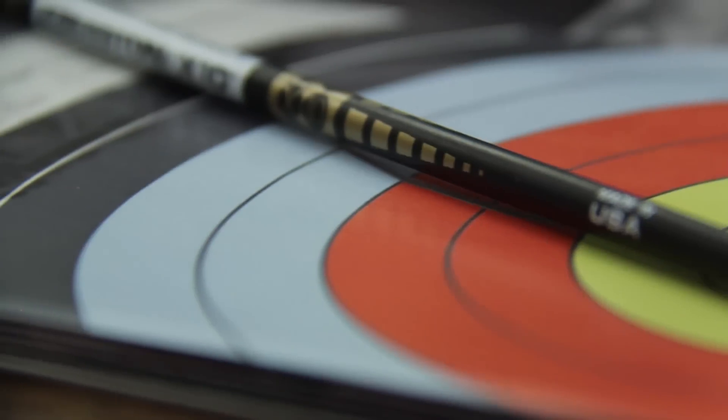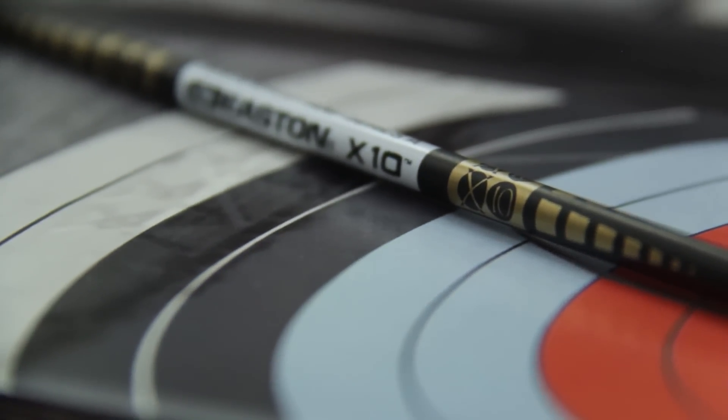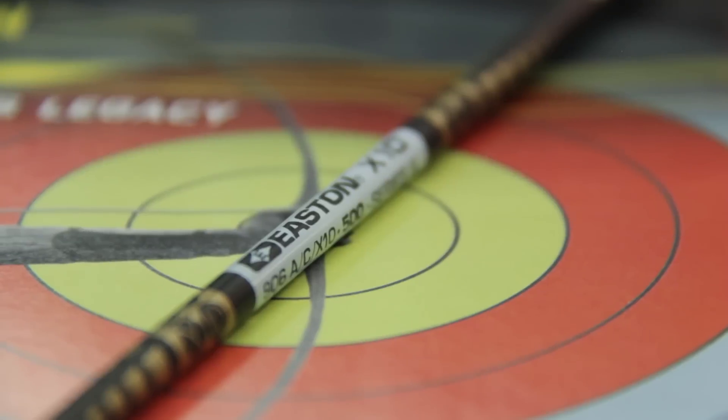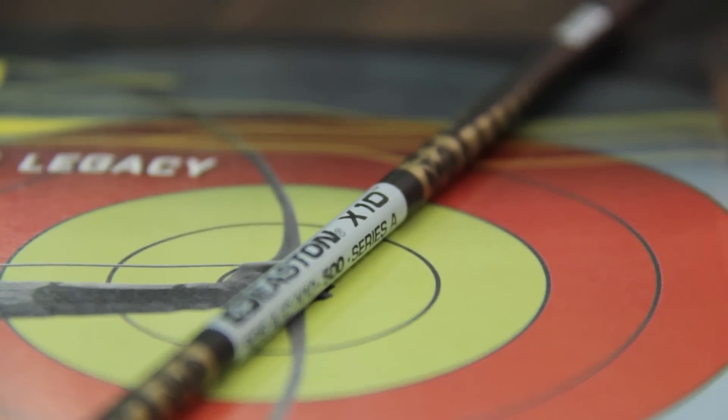At the pinnacle of performance for top recurve archers is the Easton X10. This unique barreled design provides advantages for both finger release and aerodynamics.